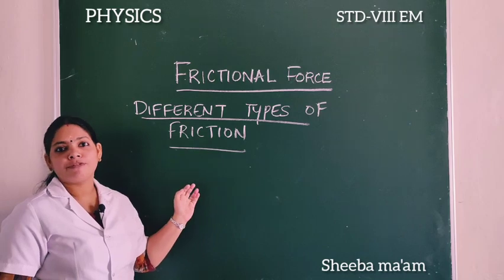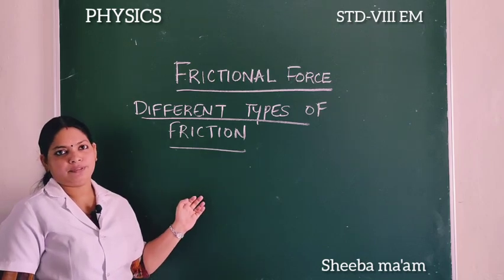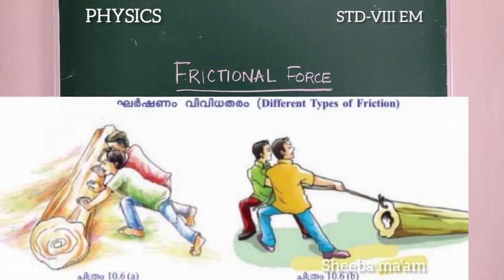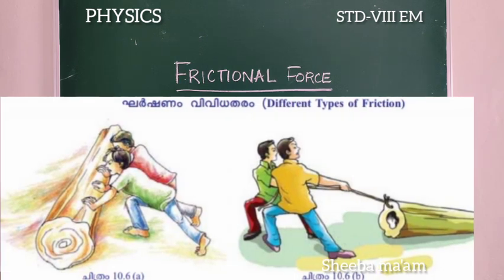Next, different types of friction. Look at this picture. Here, two instances are given. Which method is easier for moving objects — by rolling or by dragging?